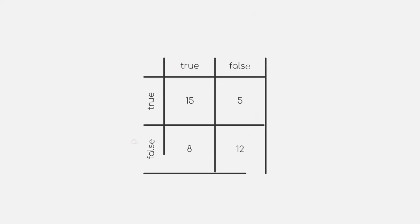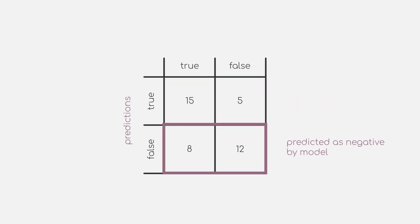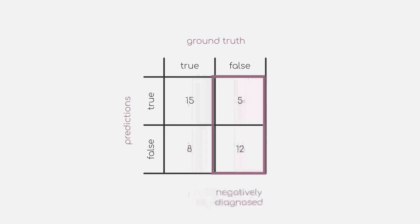The rows of our 2x2 grid indicate our predictions. The first row will list all of the samples that our model predicts to be positive, and the second row will list all of the samples our model predicts to be negative. Similarly, we also want to keep the information of our ground truth. Our first column will list all of the positively diagnosed patients and the second column will do the same for the negatively diagnosed patients.